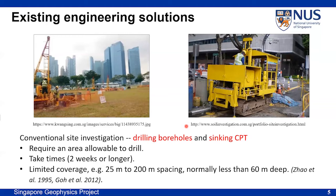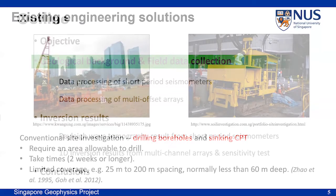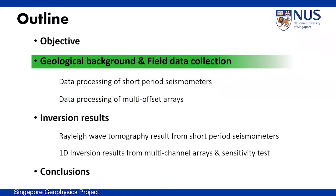Besides, the shear wave velocity from boreholes and CPT is not that reliable. That is why people start to pay more attention to geophysical methods nowadays, which are fast, cheap, and can provide information of the whole area. So we want to use ambient noise imaging based on seismic interferometry to construct the velocity map of Singapore. It would be non-destructive and can provide us information of the whole island.